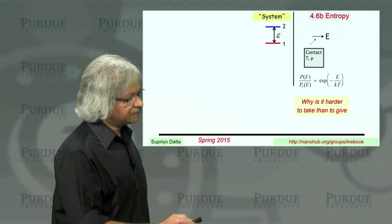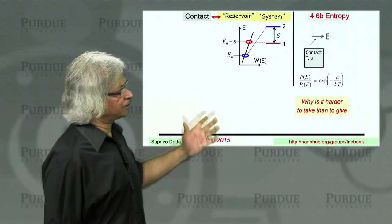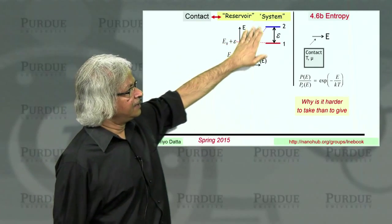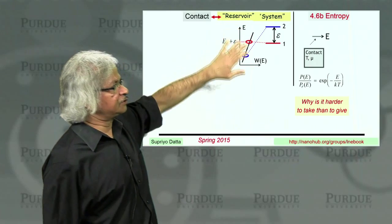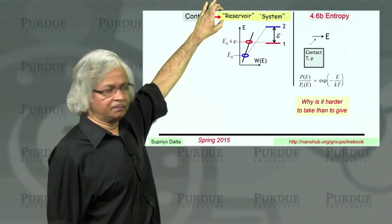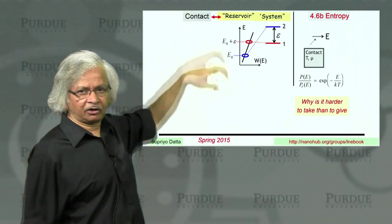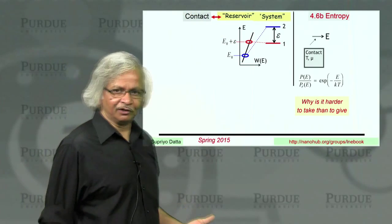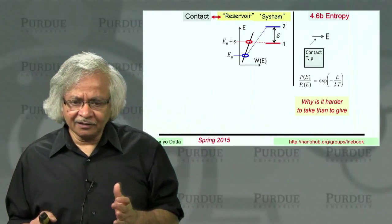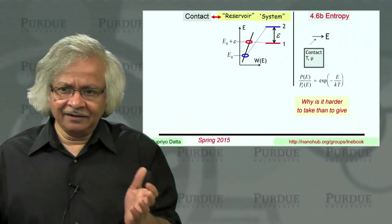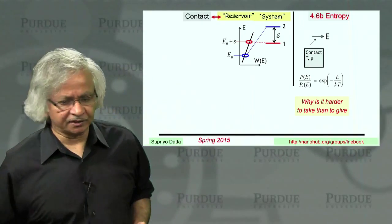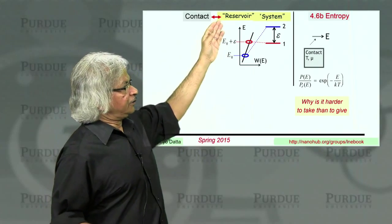And for this, the way you should think about it is, to understand this very deep point, think of the system as being connected to some reservoir. That's the technical word people use. We could call it a contact. Our contacts are essentially like reservoirs. The point is, it could be any abstract thing that takes energy or electrons from your system.